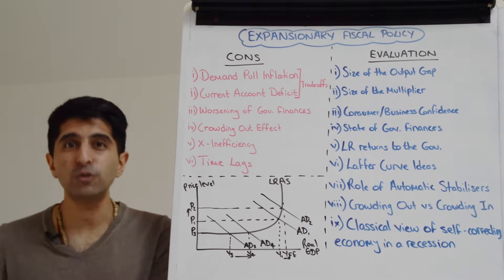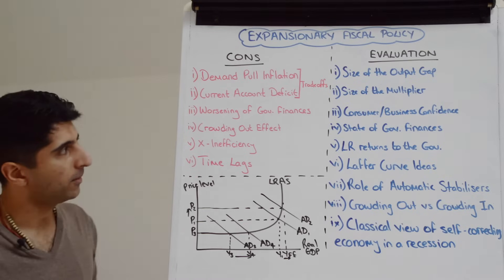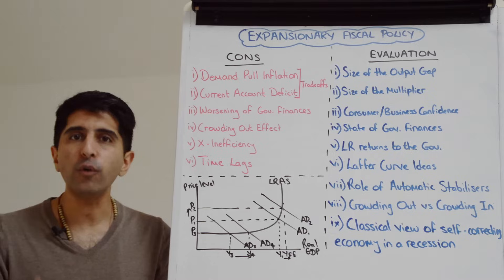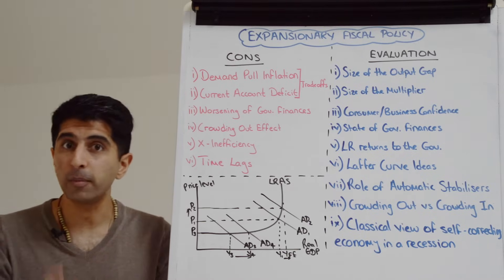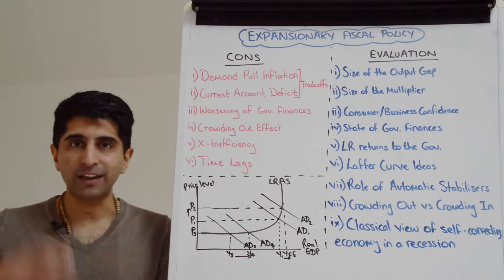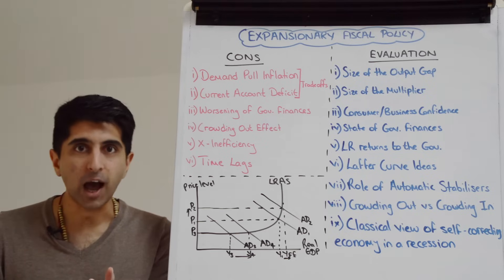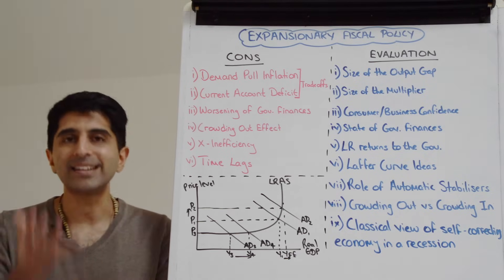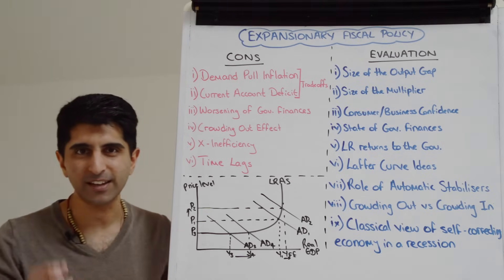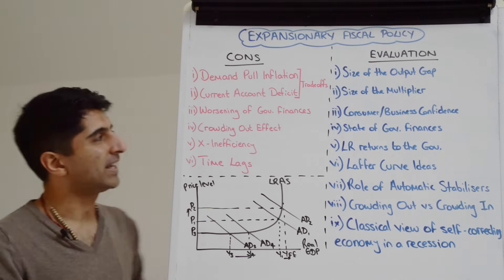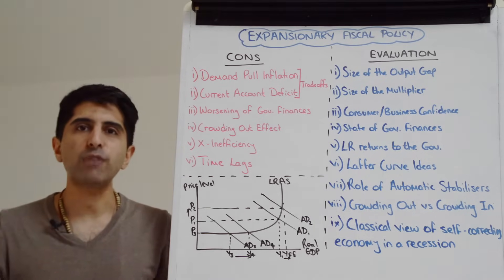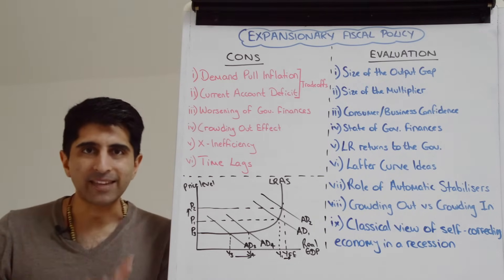Debt interest is unproductive government spending — money that could have been used much more productively. Also, if households know the government can't afford expansionary fiscal policy in the form of an income tax cut, they could save the tax cut now expecting a future tax rise. This is known as Ricardian equivalence, meaning an income tax cut will not boost the economy as theory suggests.